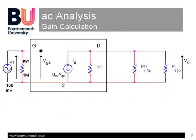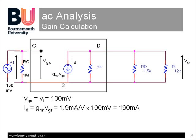Tracing the signal values shows that the JFET gate voltage VGS is equal to the 100 millivolts input signal. The drain current is then calculated as a transconductance GM of 1.9 milliamps per volt, multiplied by the gate voltage of 100 millivolts to give a value of 190 microamps.